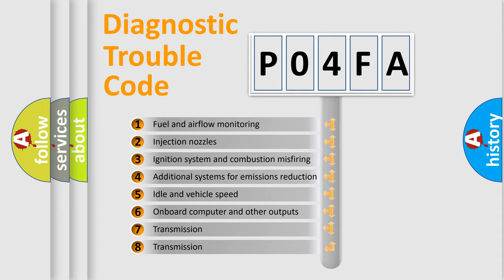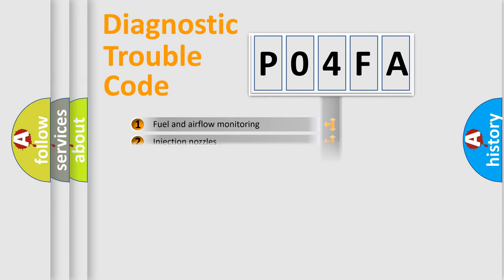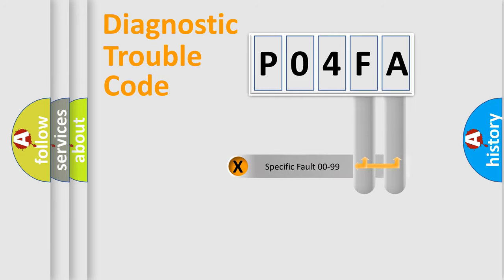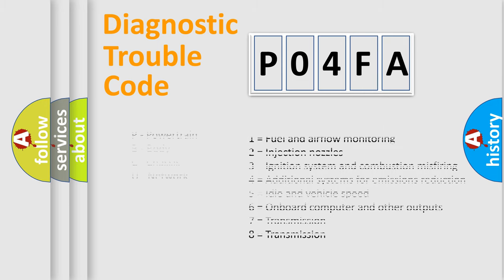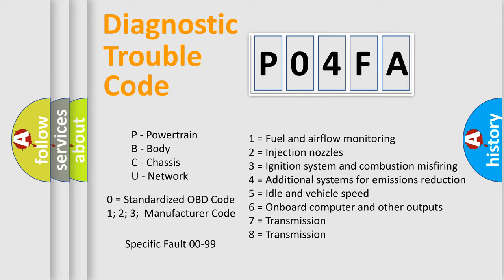The distribution shown is valid only for the standardized DTC code. Only the last two characters define the specific fault of the group. Let's not forget that such a division is valid only if the second character code is expressed by the number zero.